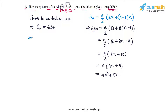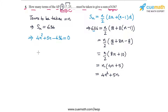So 4n squared plus 5n equals 636. Writing this in standard quadratic form: 4n squared plus 5n minus 636 equals 0. Solving this quadratic equation will give us the value of n.